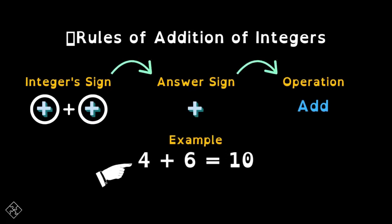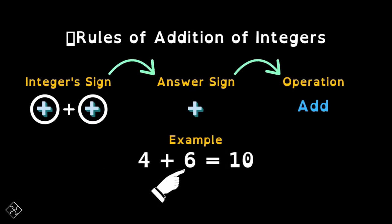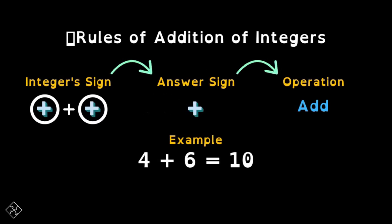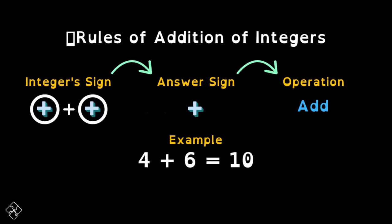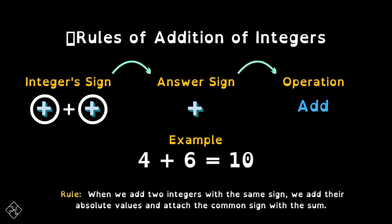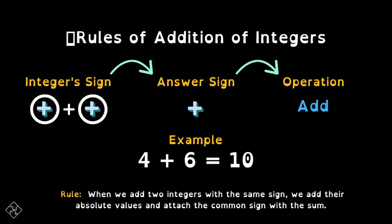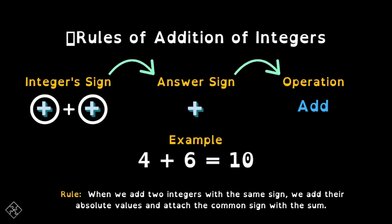Since 4 is a positive integer and 6 is a positive integer, ang answer sign natin is positive. Ang operation is addition. So, 4 plus 6 is equal to 10 — basic addition lang. Tandaan yung rule: when we add two numbers or integers with the same sign, we add their absolute values and attach the common sign with the sum.